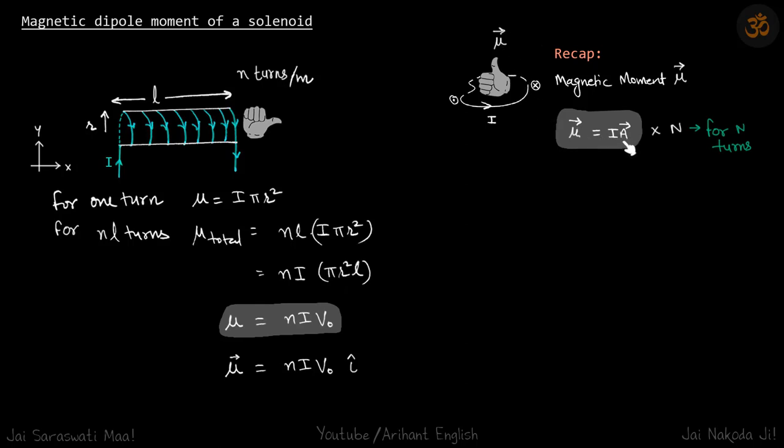So μ = iA vector, and you multiply it by n if this coil has n turns.